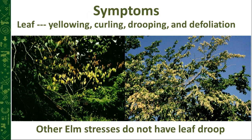When looking for symptoms, Dutch elm disease shows yellowing, curling foliage that droops and drops leaves. Other elm stresses don't typically have that drooping, wilting, curling look. That yellowing, curling, and drooping becomes a very recognizable diagnostic form for Dutch elm disease.